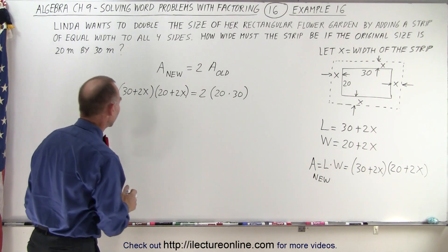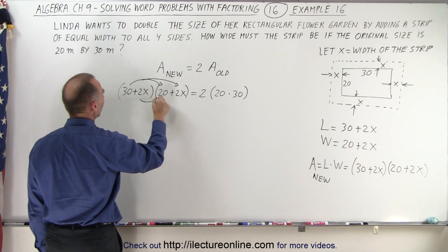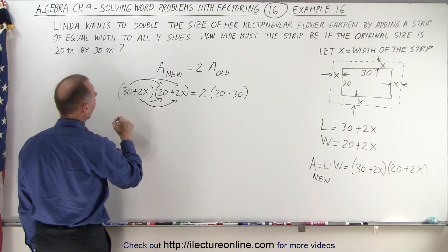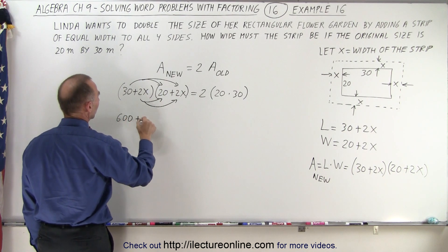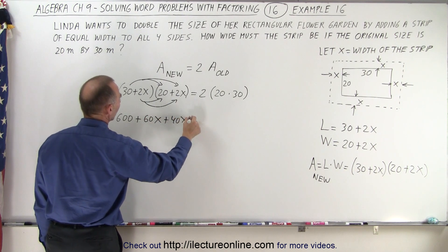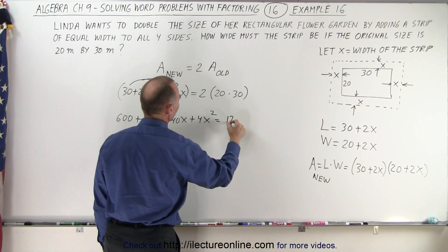So let's go ahead and multiply everything together. So we have 30 times 20, 30 times 2x, 2x times 20, 2x times 2x. So this gives us 600 plus 60x plus 40x plus 4x squared is equal to 600 times 2 which is 1200.